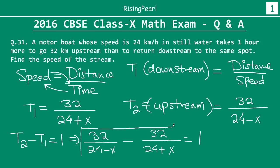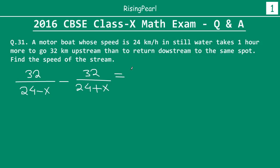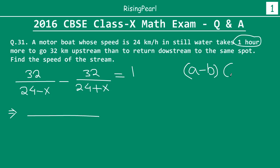We have to solve this equation. Let's write it again: 32 divided by (24 minus x) minus 32 divided by (24 plus x) equals 1. The denominator when combined will be in the form (A minus B)(A plus B), which equals A squared minus B squared. So the denominator becomes 24 squared minus x squared.